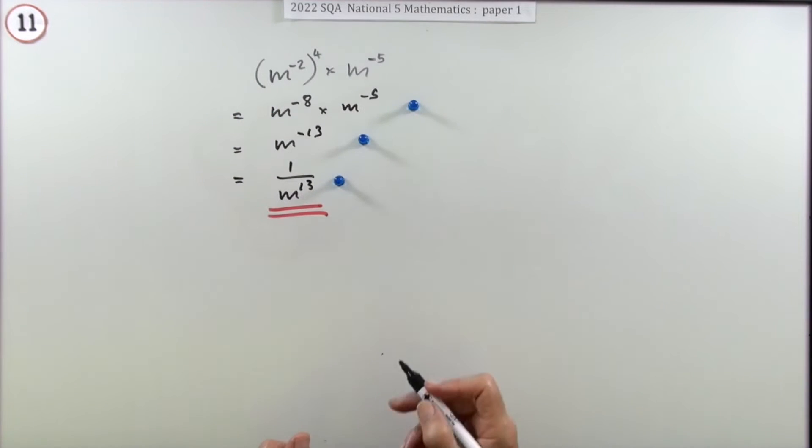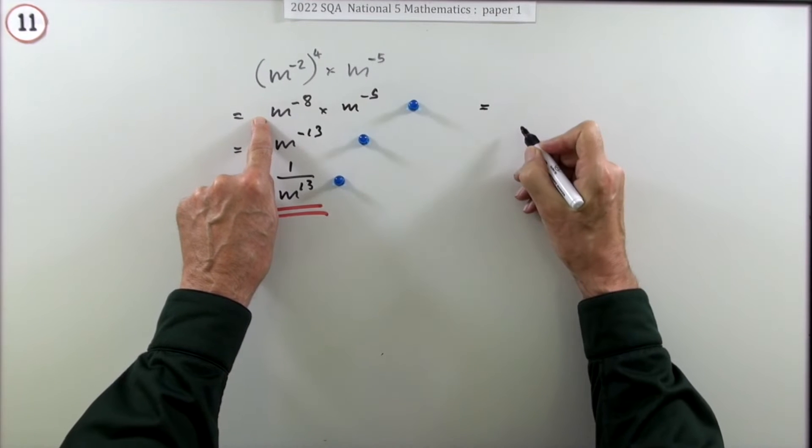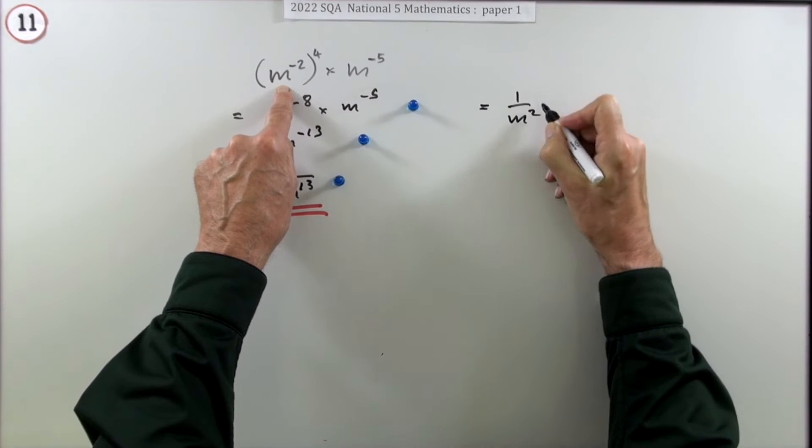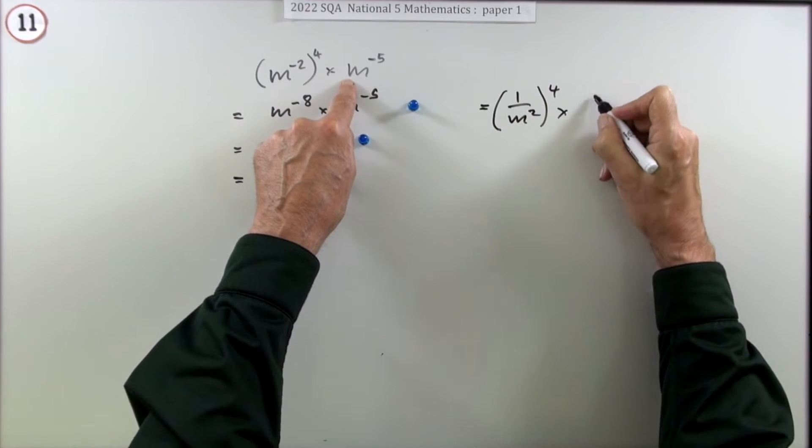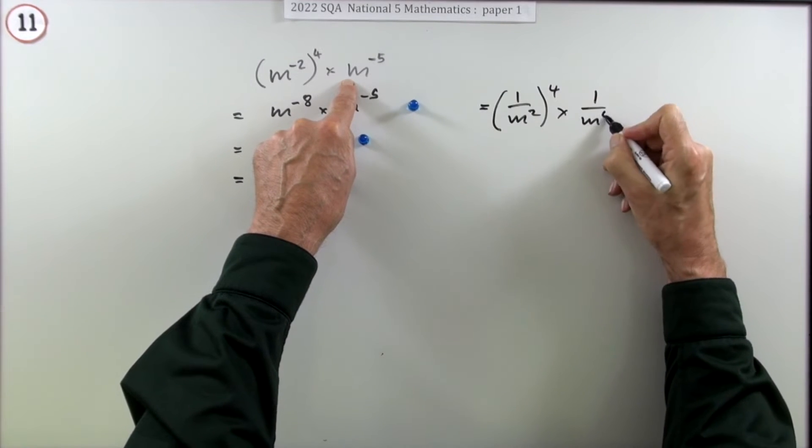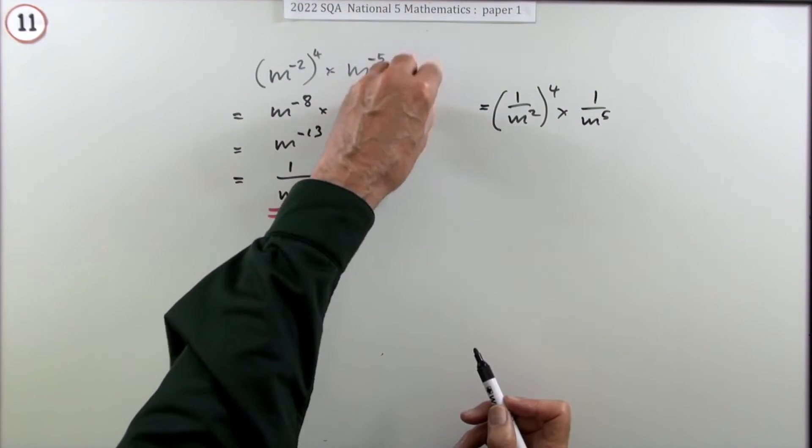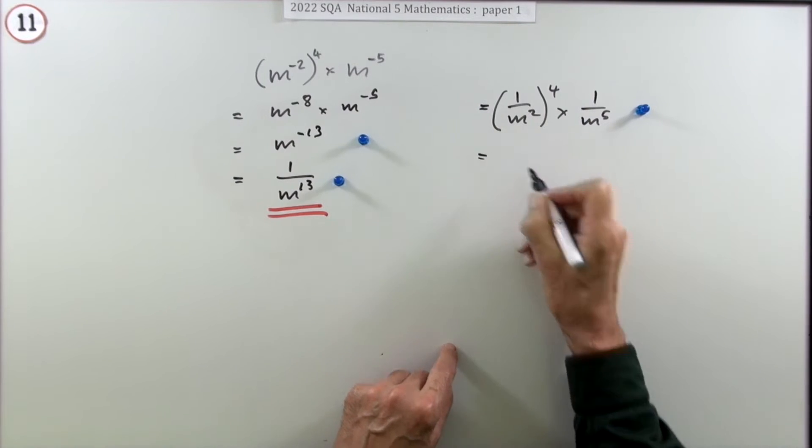Now the alternative would have been to get rid of the negatives to begin with. You've probably done it this way, so that instead of starting with that line I would start with saying well m to the negative 2 actually means 1 over m squared, and m to the negative 5 actually means 1 over m to the power 5. You're actually doing divisions rather than multiplications. Doing that would be the first mark, that was the mark for changing them to positive powers.